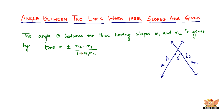Then theta equals tan inverse of whatever value you get after solving this. That's how you find the angle theta between lines having slopes m1 and m2. That ends this video — I'll see you in the forthcoming videos with a problem based on how to find the angle between two lines when their slopes are given.